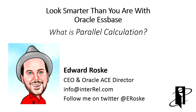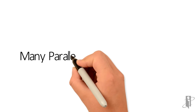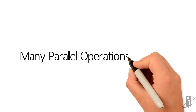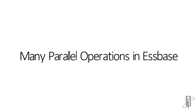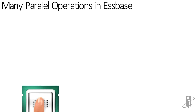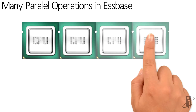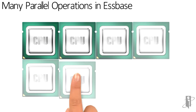In the world of S space, what exactly does parallel calculation mean? Taking a step back for a second, there are actually lots of things that can be done in parallel in S space. Parallel means to use more than one CPU or core at the same time.